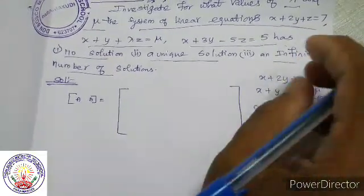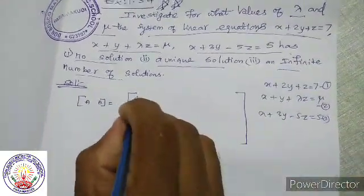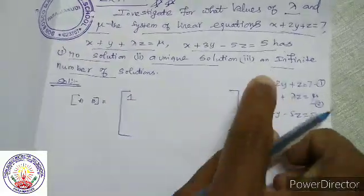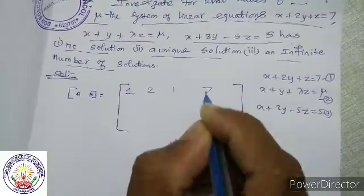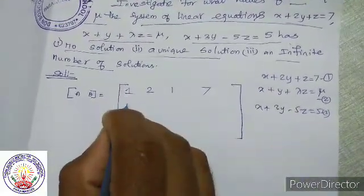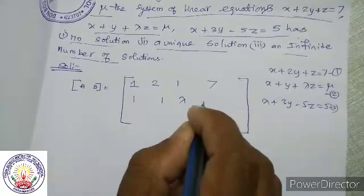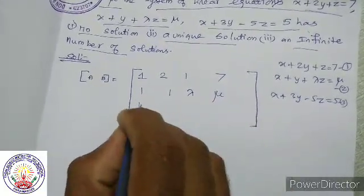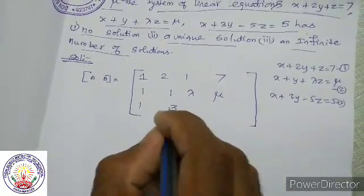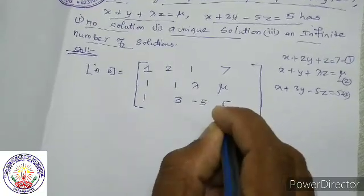First, convert and write the coefficient values. The augmented matrix is: row 1: 1, 2, 1, 7; row 2: 1, 1, lambda, mu; row 3: 1, 3, minus 5, 5.